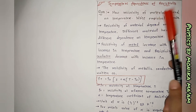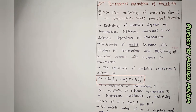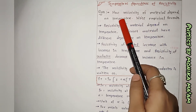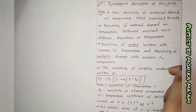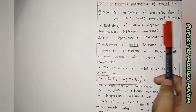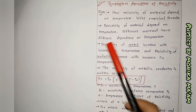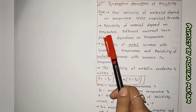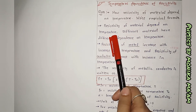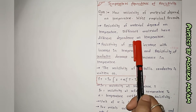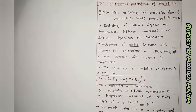We start with temperature dependence of resistivity. We already know what resistivity is, its unit and dimension. Now we need to see how resistivity depends on temperature. The question is: how does the resistivity of a material depend on temperature? We need to write the empirical formula. Different materials have different dependence on temperature.